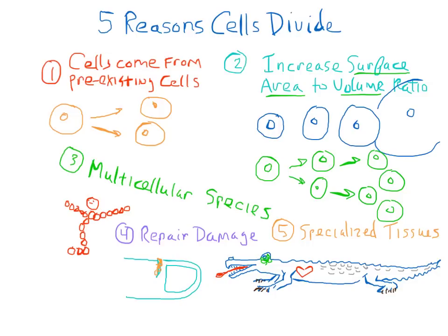And even things like eyeballs. So here's a big old eyeball in this alligator. So that's about it. Five reasons cells must divide.